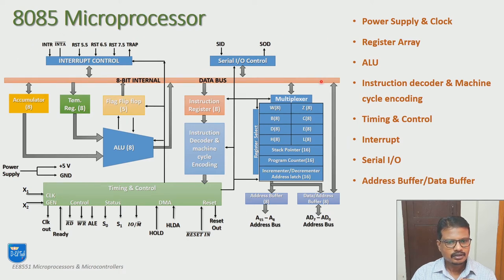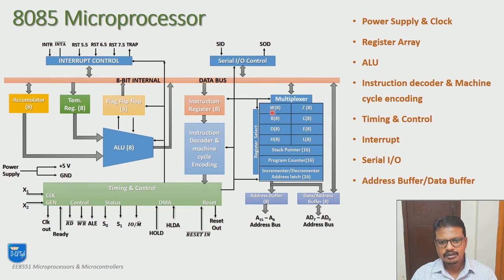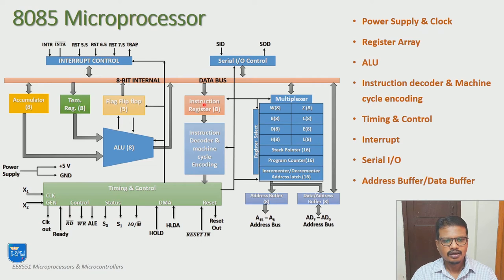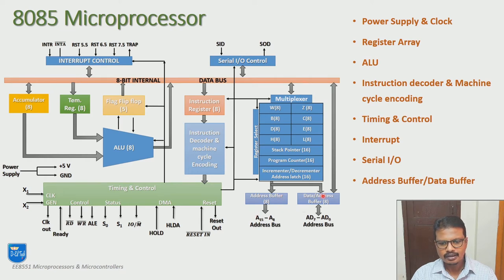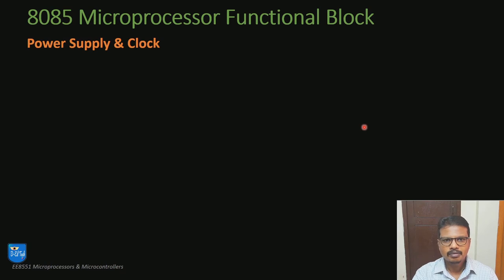In this diagram, you can see there are so many blocks. Let me start with the general purpose registers. We have about 6 general purpose registers: B, C, D, E, H, and L, and temporary registers W and Z. I will also discuss special purpose registers like stack pointer, program counter, accumulator, temporary register, flag flip-flop register, and instruction register, followed by the instruction decoder and machine cycle encoding block, the timing and control block, interrupt control block, serial IO block, and finally the address buffer and data buffer.